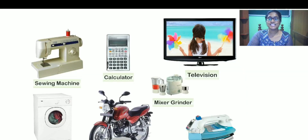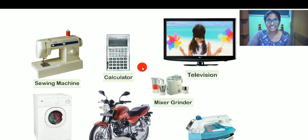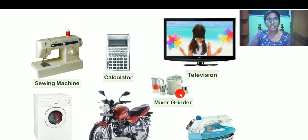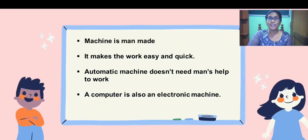Now let us study about the examples of machines. The examples of machines may be a sewing machine, a calculator for calculation and sewing machine for stitching clothes, television for watching, mixer for cooking and motorcycle for traveling, washing machine for washing clothes and electronic iron box to iron the clothes.